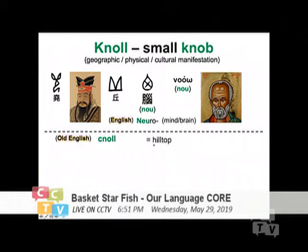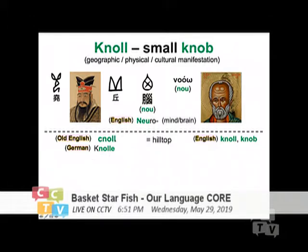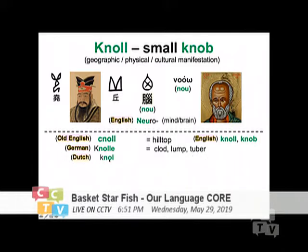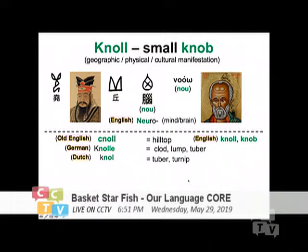It obviously came down to 'neuro' — anything to do with neurology, our brain, the mind, the intelligence. So now I'll take you to another area. The old English, if you look in the dictionary for 'no,' you will chase it down — Old English will be 'no' also, and it means the hilltop. So this is geographic, nothing to do with the physical body. So the English will have 'no' and 'knob,' but now I'm taking you a little bit further away.